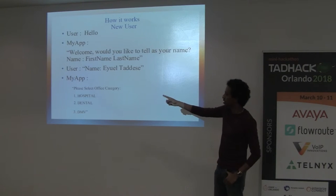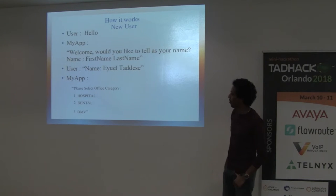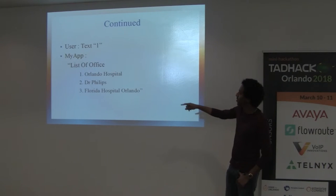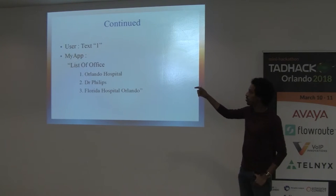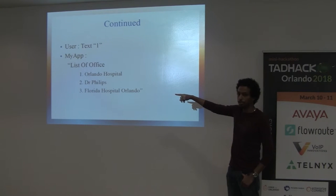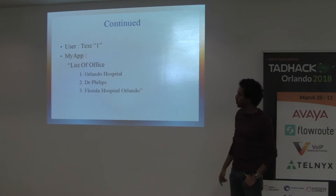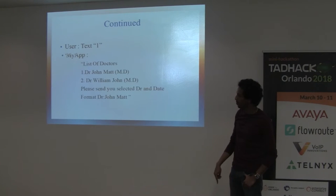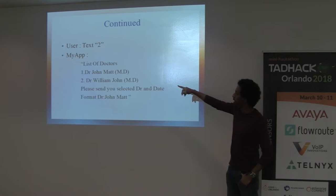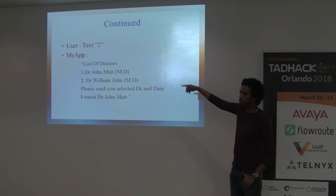Let's say the user selects hospital — they text '1' for the hospital choice. They'll then receive a list of hospitals near them. Let's say they select Dr. Phillips. The app then sends a list of doctors in that hospital.